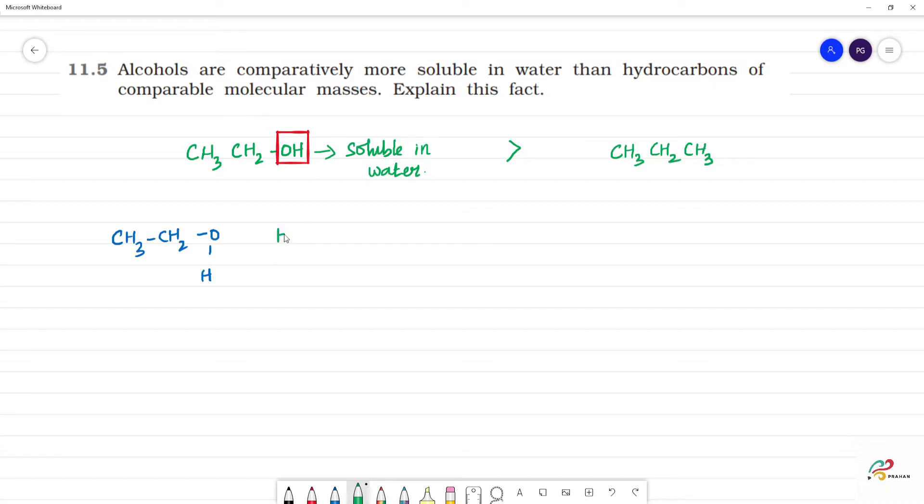We call it hydrogen, then there is oxygen, then there is hydrogen, this is H2O. It forms intermolecular hydrogen bonding.